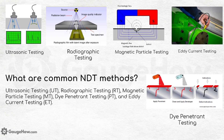What are common NDT methods? These include ultrasonic testing, radiographic testing, magnetic particle testing, dye penetrant testing, and eddy current testing. Figures for each method are provided to help you understand the differences between them.